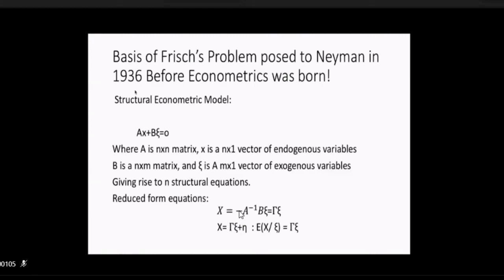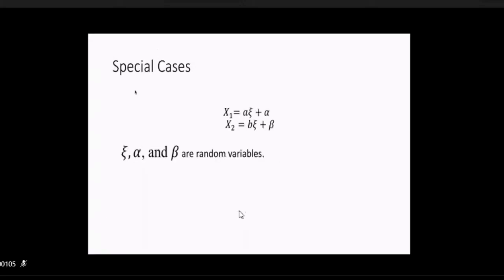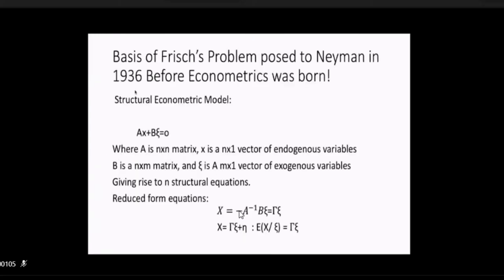Then there is a normal procedure whereby you ask the question, given the exogenous variable ξ, what are the values of the endogenous variables X? And that is answered by deducing from that equation what is called a reduced form equation through a matrix operation. X is equal to minus A inverse B ξ or equal to Γξ. That is called reduced form equation. So this is the problem and from this problem one can write down a regression equation. X is equal to Γξ plus an η which is a vector of random variables such that expected value of X given ξ is equal to Γξ.